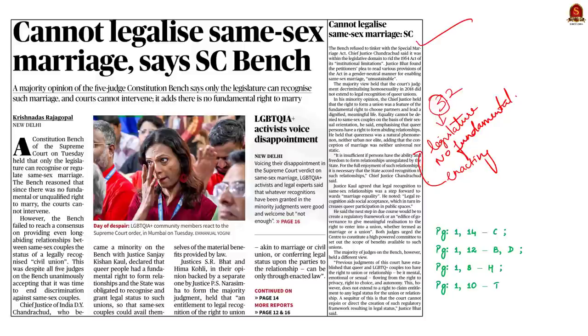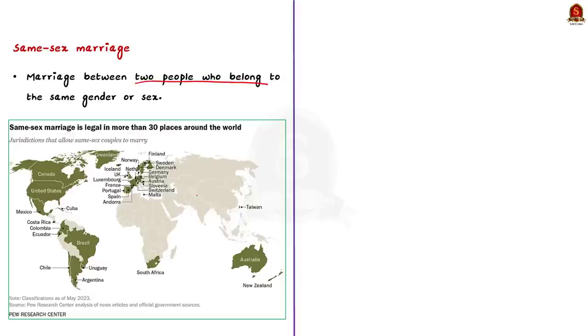Same-sex marriage refers to marriage between two people who belong to the same gender. Same-sex marriages have been legally recognized in more than 30 countries, including the US, England, Canada, Australia, Brazil and France. But in India, same-sex marriages are not currently legal, as Indian law defines marriage as a union between a man and a woman. Before 2018, same-sex relationships — homosexuality — were a criminal offense under Section 377 of the IPC.